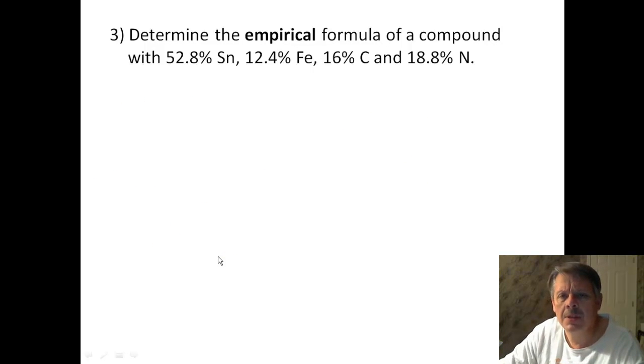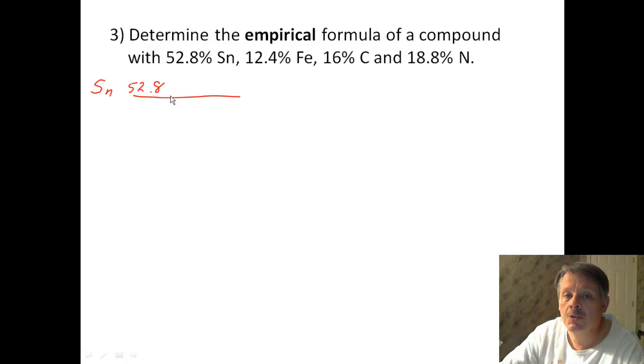How about number 3? Here we've got 1, 2, 3, 4 things. So we're going to have to work through this 4 times. So Sn is 52.8%. So we're going to treat that like it's grams. And we're going to do the same thing with iron, which is 12.4%. So we're going to treat that like grams. And then we have carbon, which is 16%. So we're going to treat that like grams. And nitrogen, which is 18.8 grams.